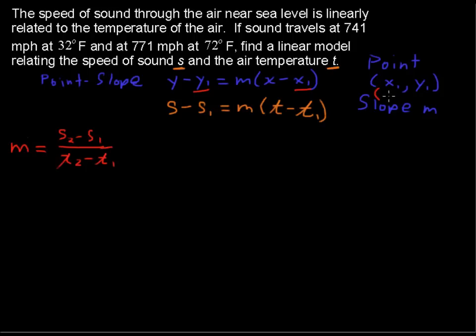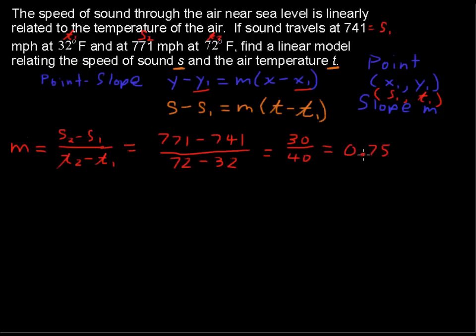And just to be clear here, I've got this S sub 1, T sub 1. So for our example, our two speeds of sound are 771, that's our S sub 2, and 741 will make that S sub 1. So I've got 771 minus 741 all over the T sub 2, that's 72 degrees, minus T sub 1, that's 32 degrees, so that equals 30 over 40. Or we're talking about speed of sound, so let's put it in a decimal, 0.75.